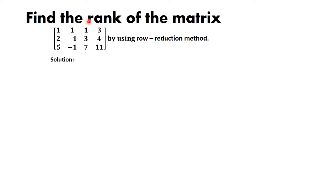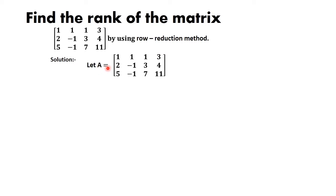The problem is: find the rank of the matrix [1, 1, 1, 3; 2, -1, 3, 4; 5, -1, 7, 11] using the row reduction method. Let us consider the given matrix as A, so A = [1, 1, 1, 3; 2, -1, 3, 4; 5, -1, 7, 11].